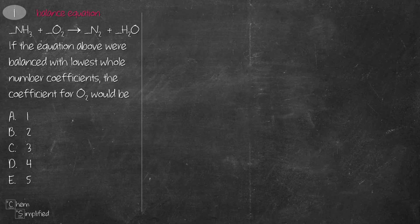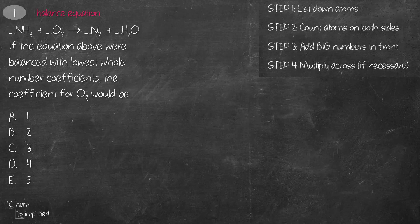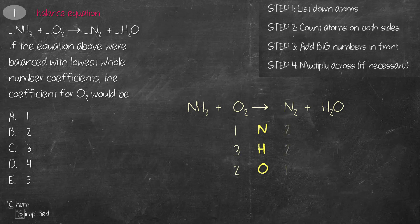This is a balancing equation question. First thing we have to do is list down all the atoms that we have in the equation and then count all the atoms on both sides. Then we add big numbers in front of the terms to balance the equation. Don't forget to update all the atom counts for each number that you add.